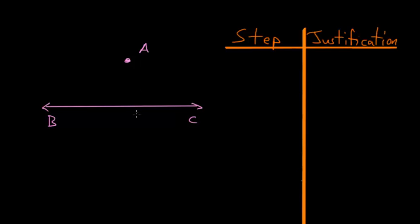Our goal is to construct a parallel line through point A that's parallel to line BC. To start, let's first pick some point at random along line BC, which we can label D.